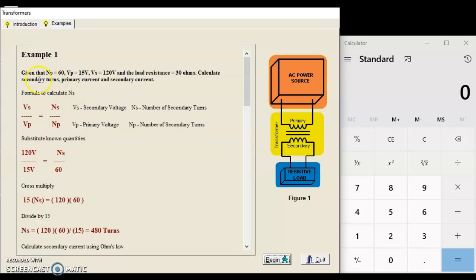Look through the examples, very good examples that work through what you're looking at. I'll take example number one here. We have a primary winding that has 60 turns, a voltage on our primary winding of 15 volts, and a voltage on our secondary winding of 120 volts. This is a step-up transformer where we go from a primary of 15 and increase it to 120. There is a load resistance on our secondary of 30 Ohms. We're asked to calculate the secondary turns, the primary current, and the secondary current. They plug in the equations and substitute those known quantities, do your cross-multiplying. 120 times 60 equals 15 divided by the number of secondary windings. You see that there are 480 turns.